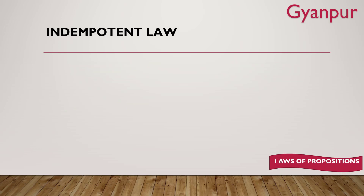Moving ahead, next is idempotent law. What is idempotent law? You have a statement p, and you apply disjunction with itself, or conjunction with itself. So p OR p will give you p, and p AND p will also give you p. If both statements are the same, whether you use OR or AND between them, the final answer will be that same statement. This is known as idempotent law.